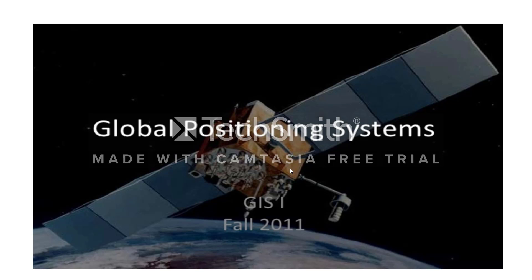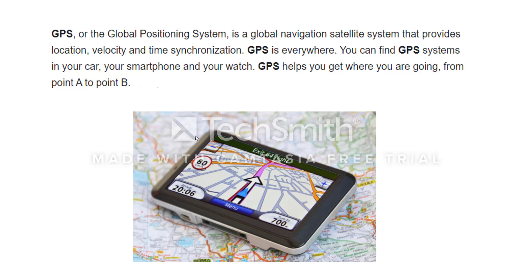Children, you all might be very familiar with this device GPS. It is mainly used to locate the position or location of different people at different places. GPS is nowadays installed in our smartphones, watches, and cars. It works with the global navigation satellite system that provides details about location, velocity, and time synchronization anywhere on the earth.